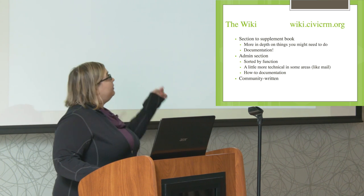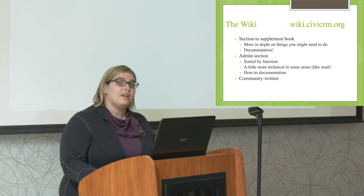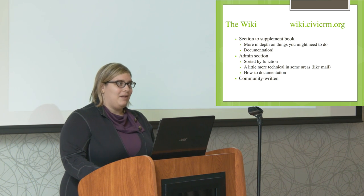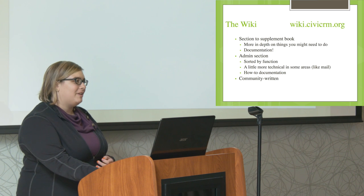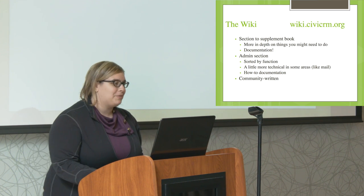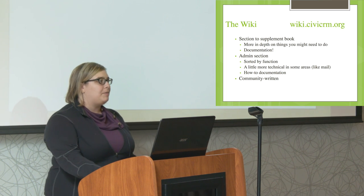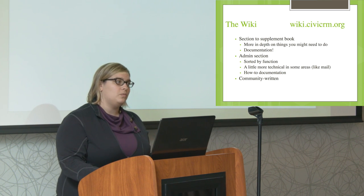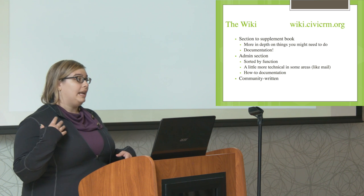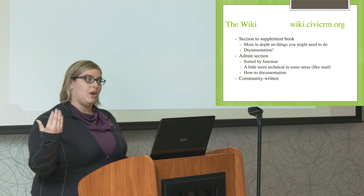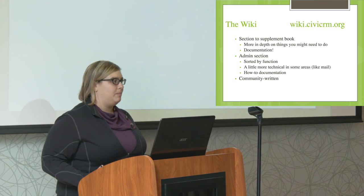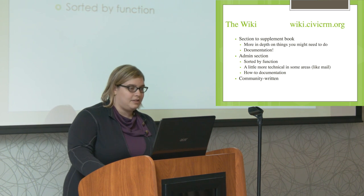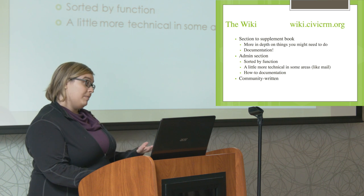The next resource is the wiki. CiviCRM is great at having standardized URLs — you'll notice a pattern: book.civicrm.org, wiki.civicrm.org. The wiki supplements the book and has a lot more in-depth documentation on different things you can do with CiviCRM. If you're looking at how to set up mail servers, that's going to be more in-depth in the wiki than in the book. That's where all the documentation lives — there's an admin section sorted by function.